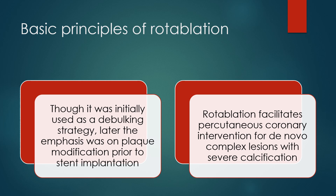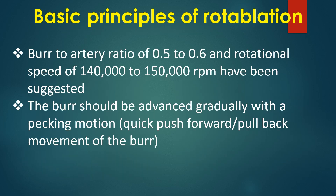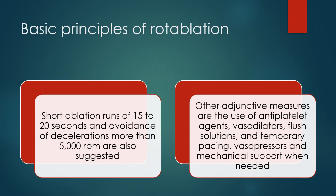Rotablation facilitates percutaneous coronary intervention for de novo complex lesions with severe calcification. Burr-to-artery ratio of 0.5 to 0.6 and rotational speed of 140,000 to 150,000 rpm have been suggested. The burr should be advanced gradually with a pecking motion — quick push forward and pull back. Short ablation runs of 15 to 20 seconds and avoidance of decelerations more than 5,000 rpm are also recommended.